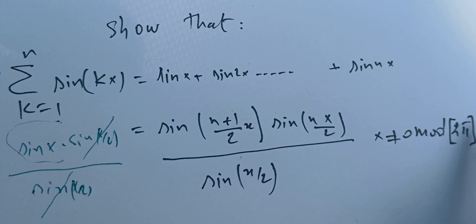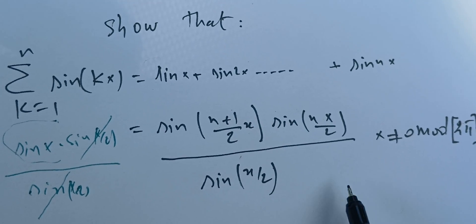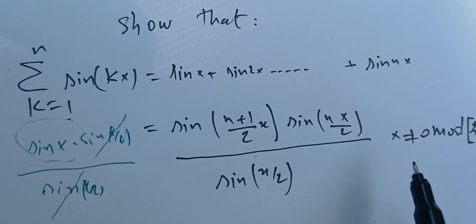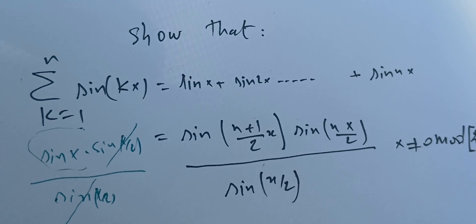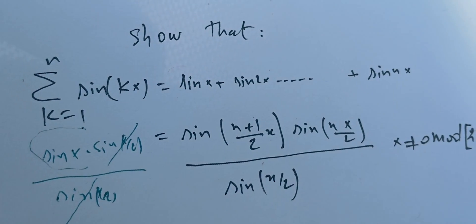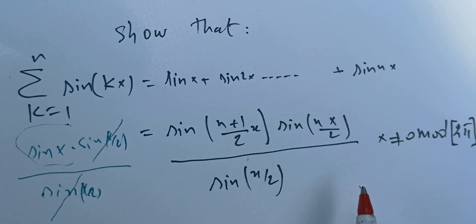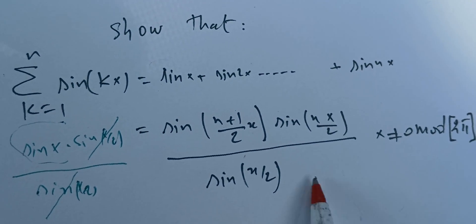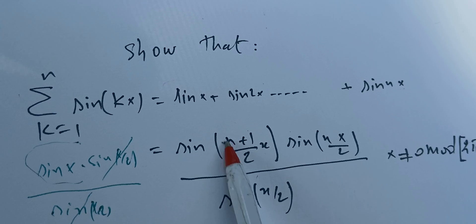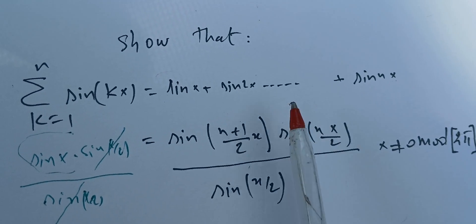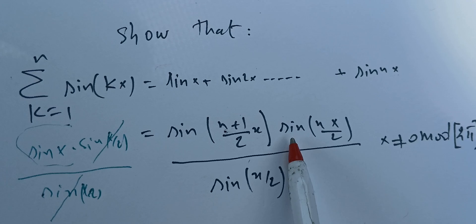We don't want sine of x/2 to be 0. To prove this result we can use the principle of mathematical induction. We can also prove it in a different manner using complex analysis and get this result very quickly, but here we want to use the principle of mathematical induction.